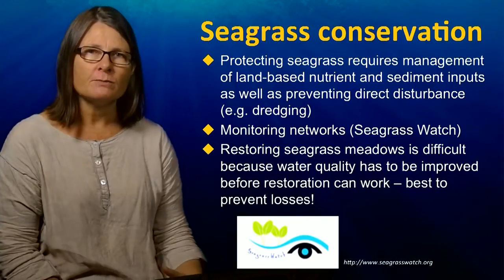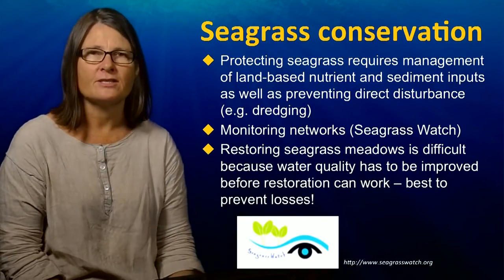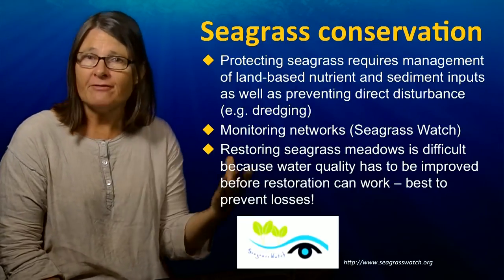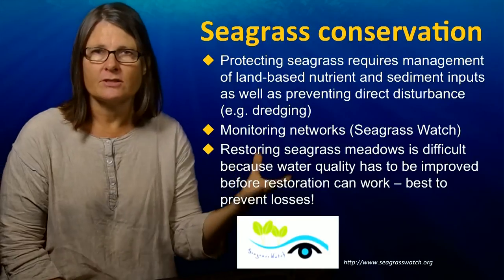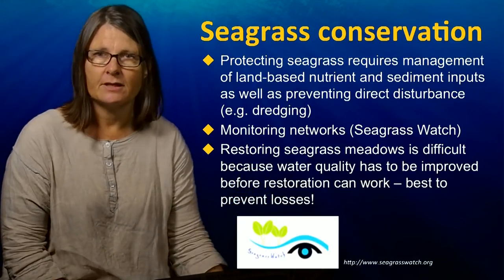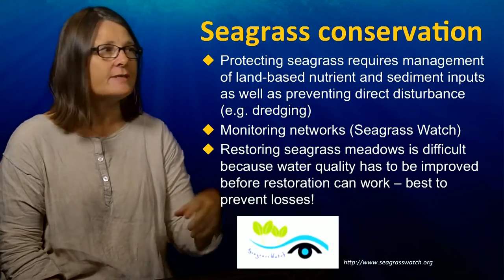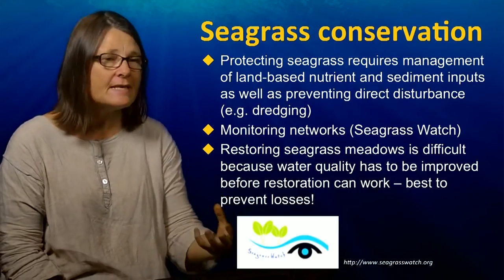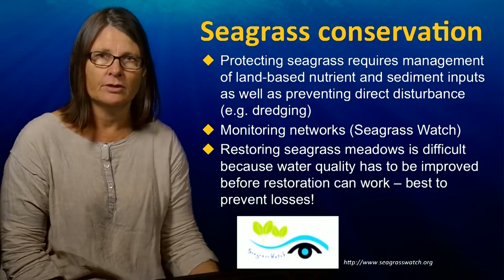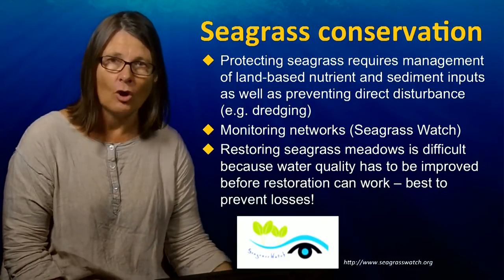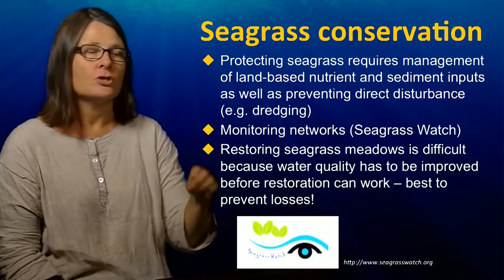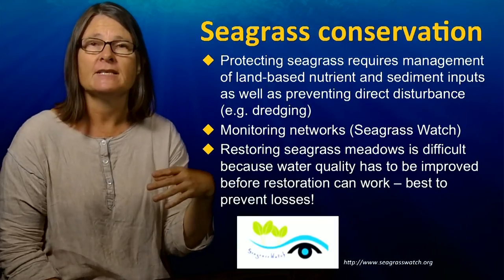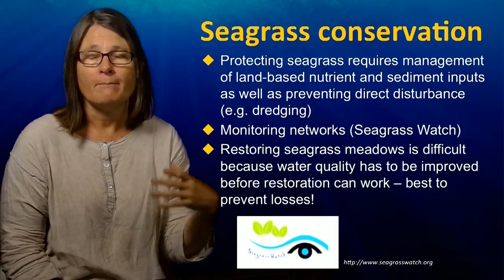For conservation, from our knowledge of what is bad for seagrasses — increased turbidity of water which decreases light to the sea floor — it's obvious that we need to manage the inputs from land. Management of both nutrient and sediment inputs is extremely important, as well as limiting direct damage, for example by dredging.